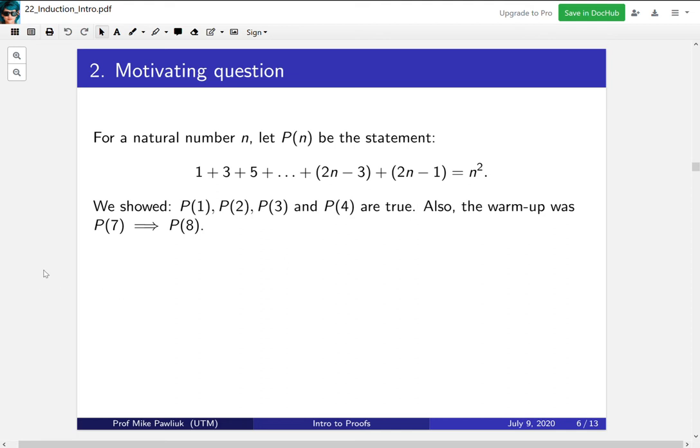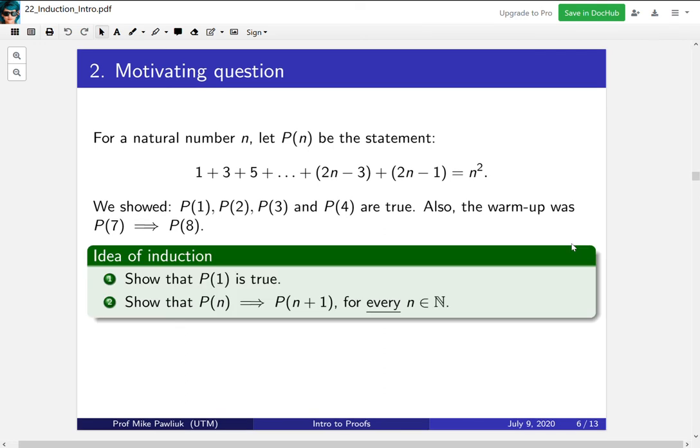And the warm-up was an implication. The warm-up said assume that p(7) is true and you can get p(8) from it. So you can think of this as a game of stepping stones. We got 1, 1 gave us 2, 2 gave us 3, 3 gave us 4, so all of these are true. And then we sort of skipped some stuff and showed p(7) implies p(8). But we don't know yet if p(7) is true. So how could we get to p(7)? Well we could go p(4) to 5 to 6 and then that goes to 7, then we'll know p(7) is true since all four of these are true. This is the idea of induction.